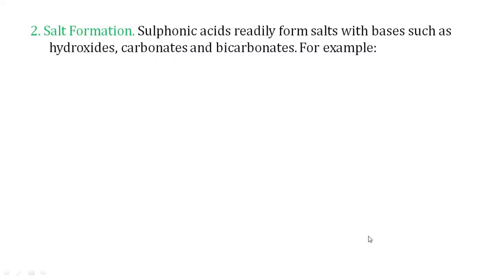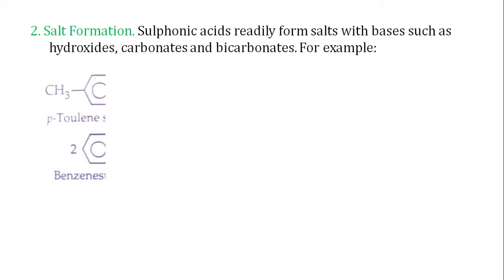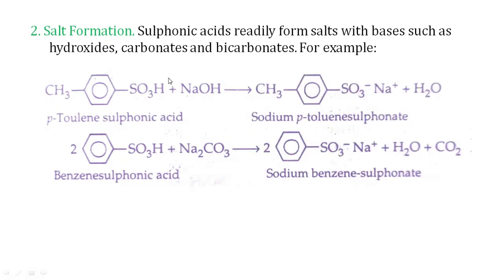Next is salt formation. Sulfonic acids readily form salts when reacted with hydroxide, carbonate, or bicarbonate. For example, paratoluenesulfonic acid with NaOH gives sodium paratoluenesulfonate. With Na2CO3, benzene sulfonic acid gives sodium benzenesulfonate with evolution of carbon dioxide. These salts can be easily made.